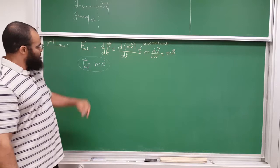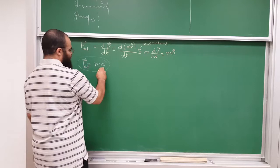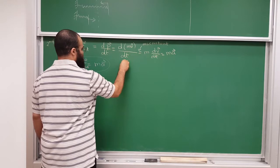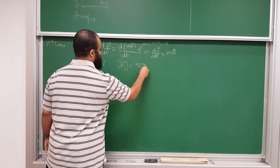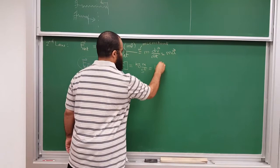Let me discuss units. The mass is in kilograms, the acceleration is in meters per second squared, so the units of force would be kilograms times meters per second squared, and that is called a newton — one newton, one N.